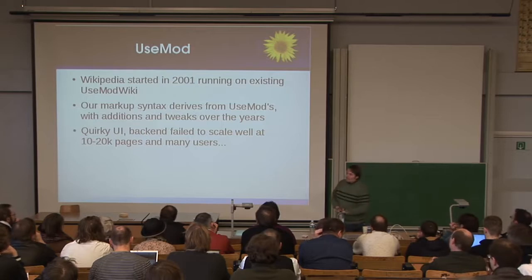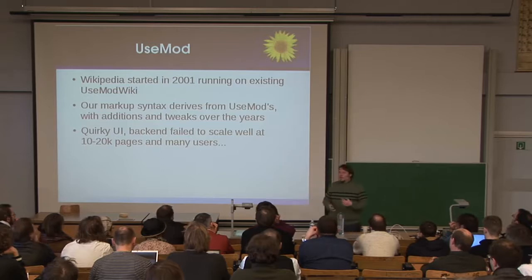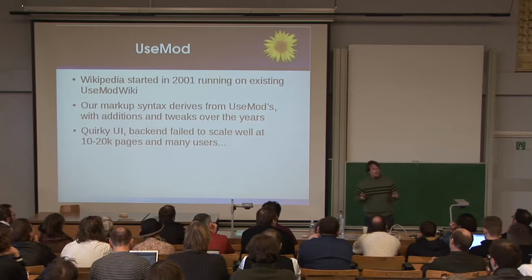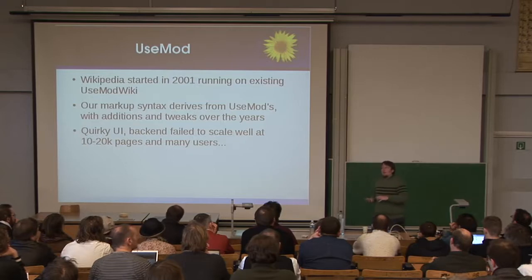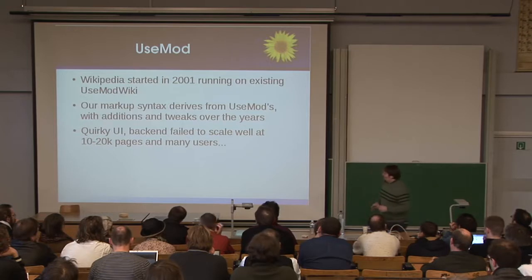The basic problem with UseMod was that it just really wasn't built to scale. For a small site, just fine. But after about a year, we got to 10,000–20,000 pages with a lot of people editing simultaneously. The system had a locking file mechanism to protect against simultaneous edits, but sometimes it would forget to remove the lock file. So it would just break for a few hours until someone went in and fixed it. Fun little stuff like that.